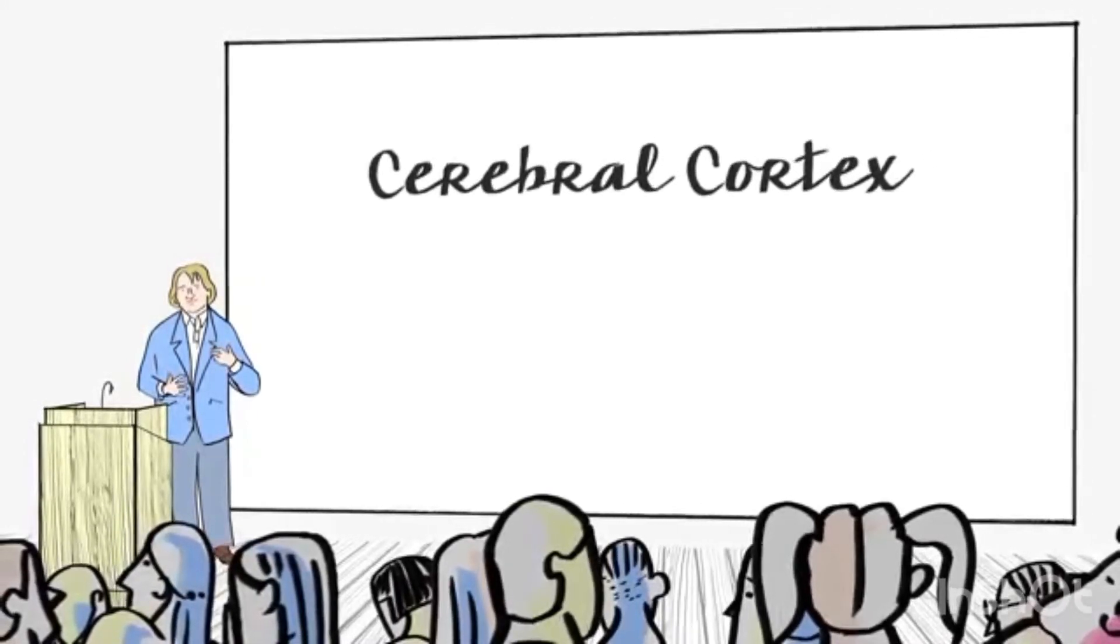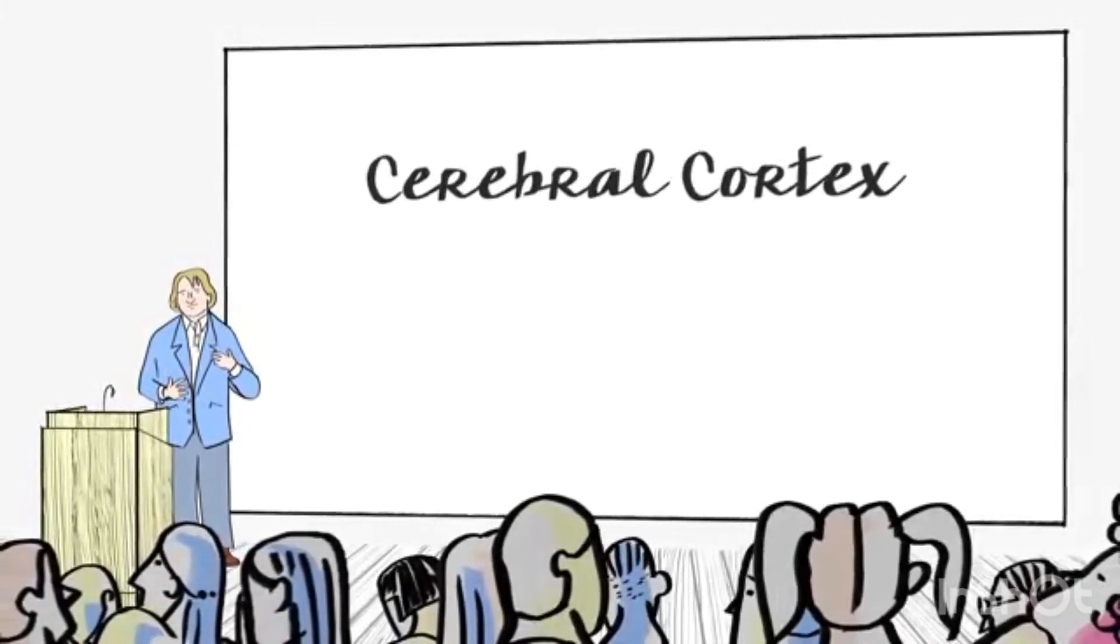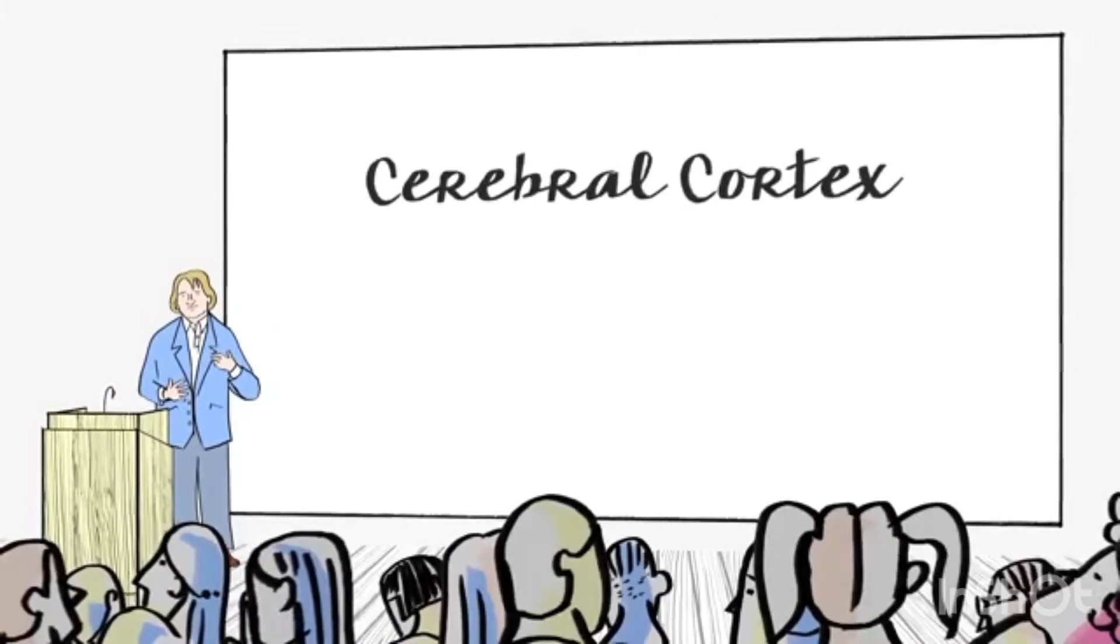In the occipital lobe, you have a map for vision, and in the temporal lobe, you have a map for sound.